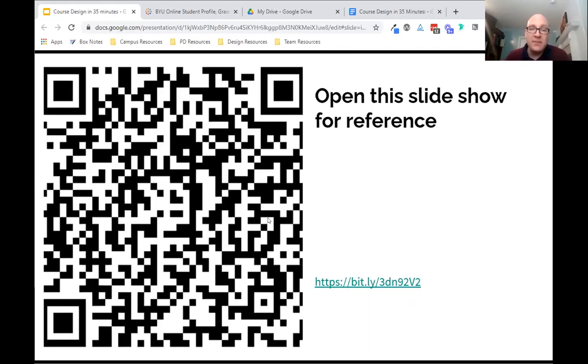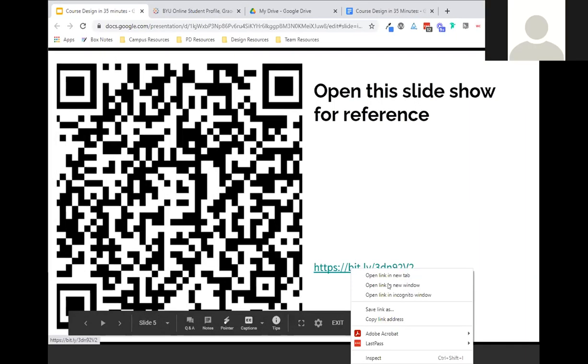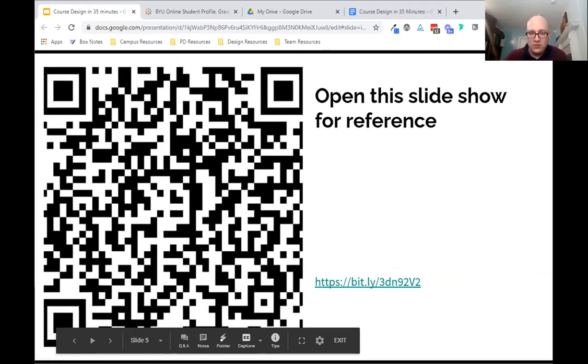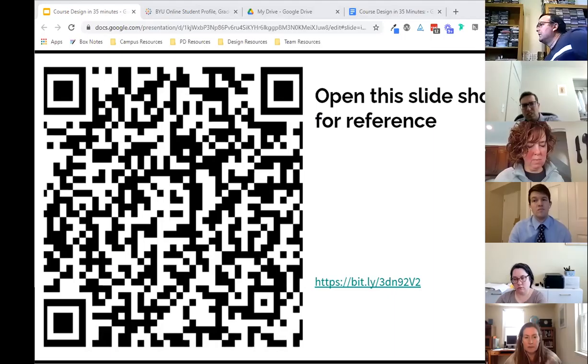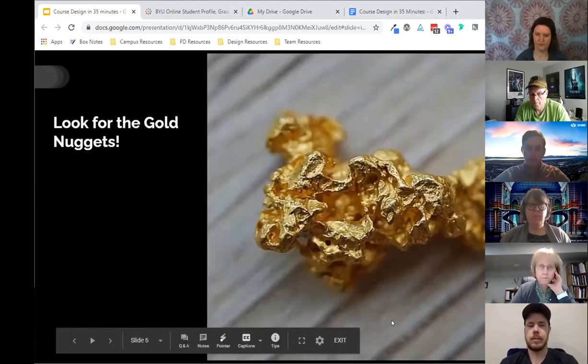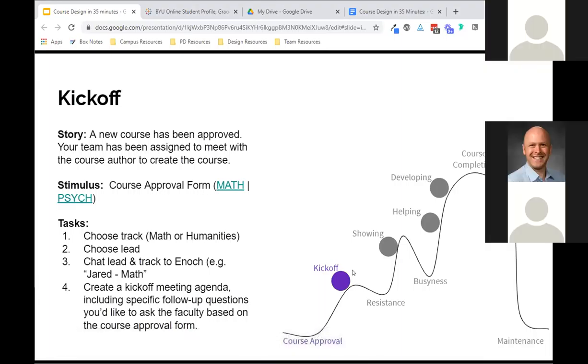So the first breakout, here's the story of this is that a new course has just been approved for the higher ed online program that you're working in. And you've been assigned as the instructional designer team for this course and you need to meet with that course author. So what you're going to see for each of these kickoff, for each of these breakout rooms, you're going to see kind of the story here and then you're going to see a stimulus. So you'll see the course approval form.